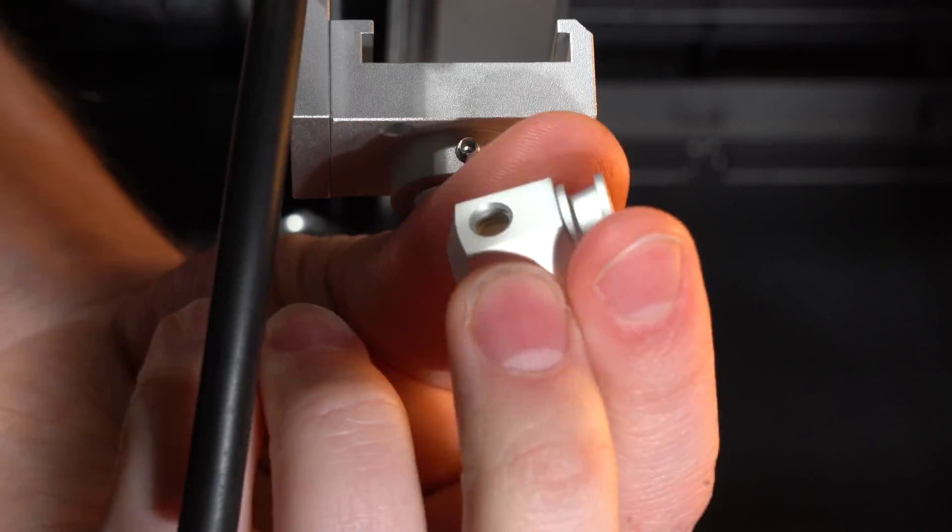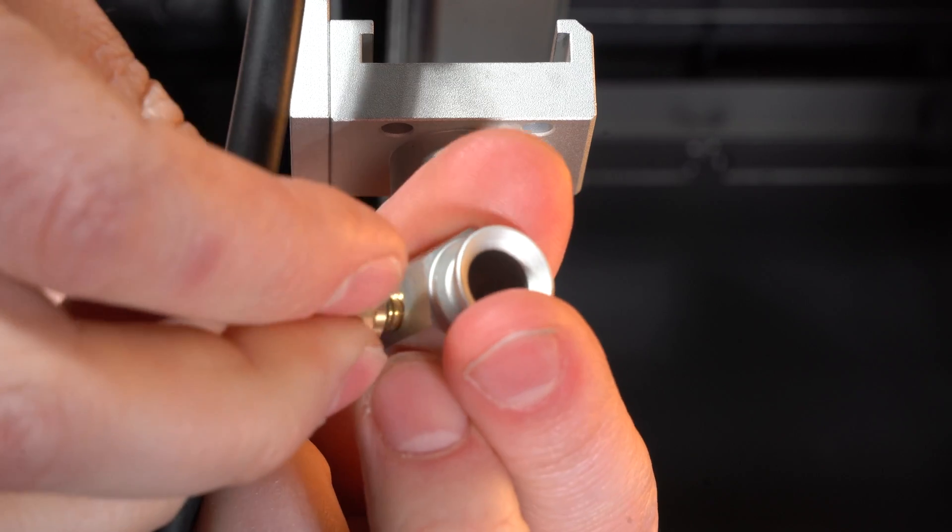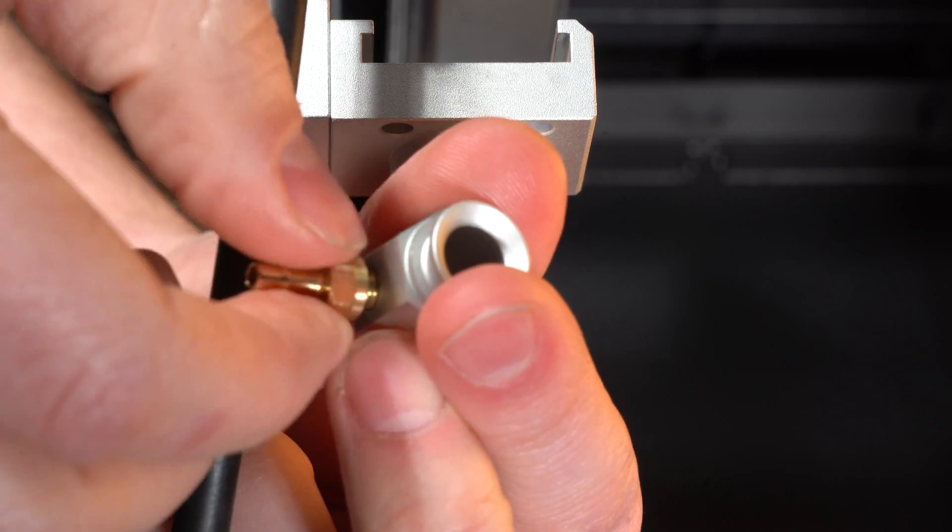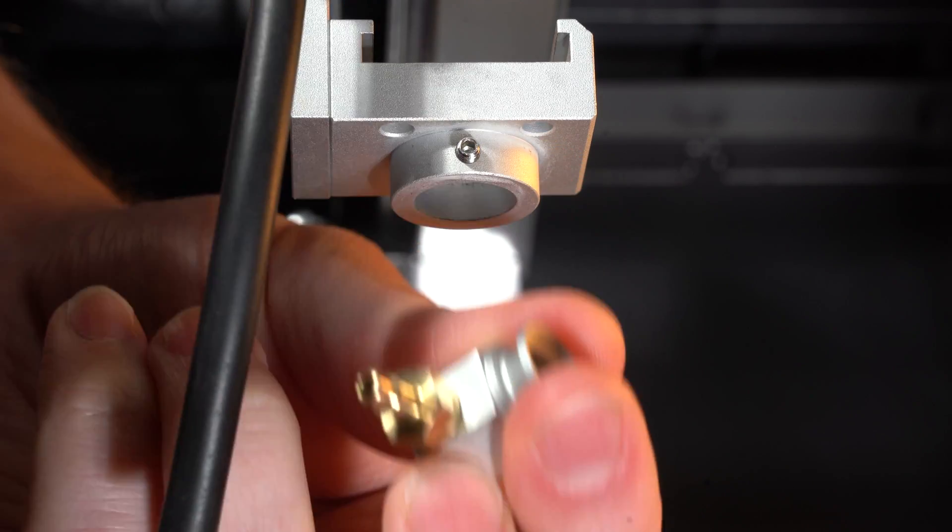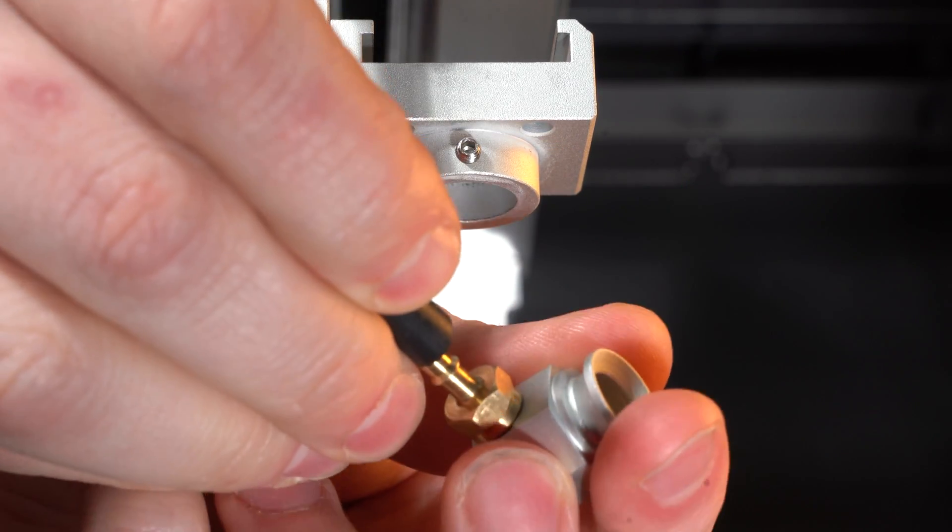Take your new cone and screw in the air nozzle. You only have to do this finger tight. You don't have to crank it down too much. Attach the hose to the nozzle.